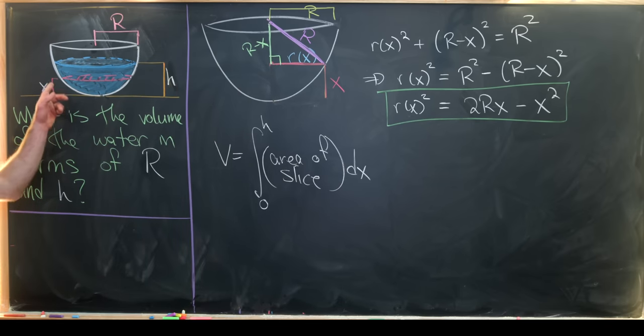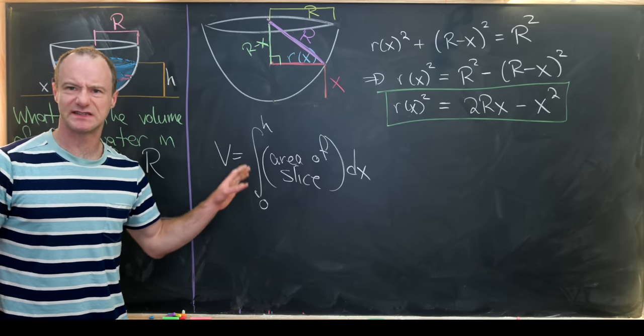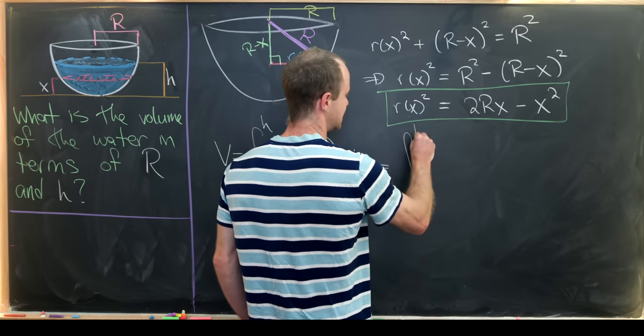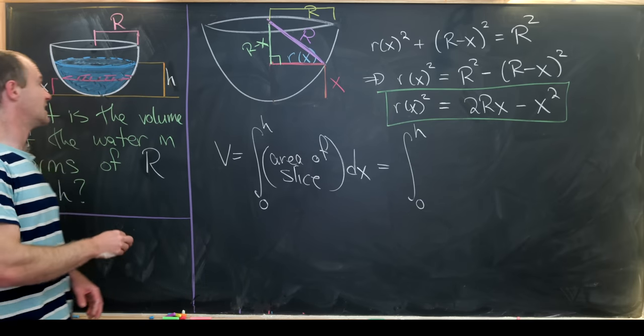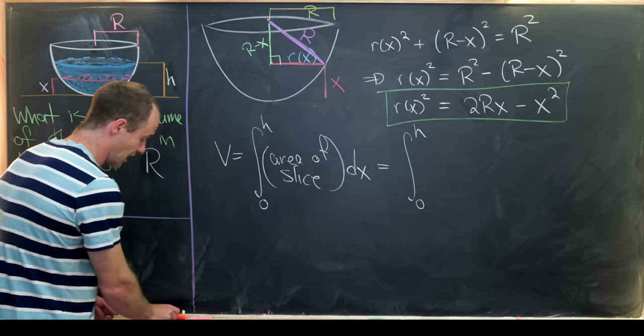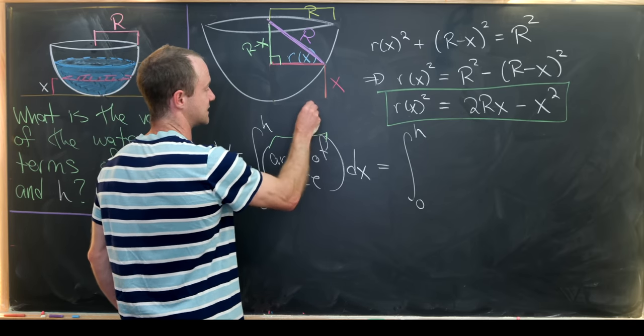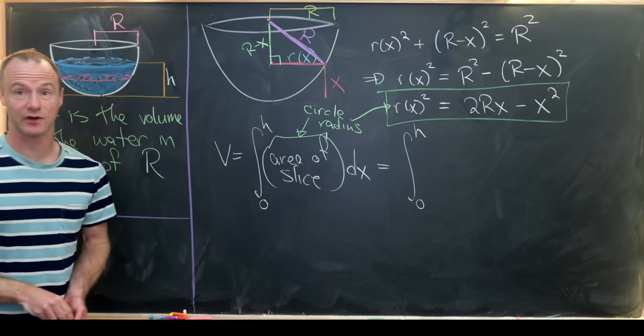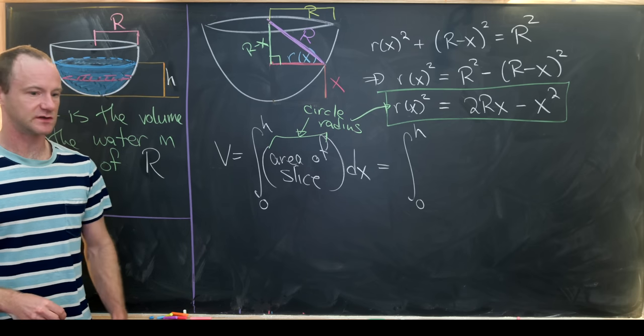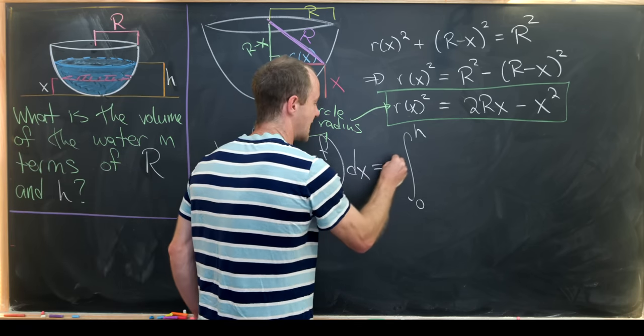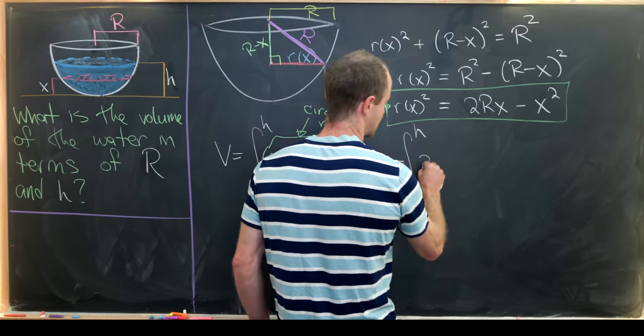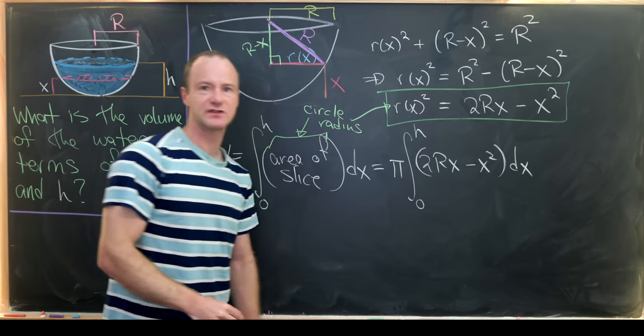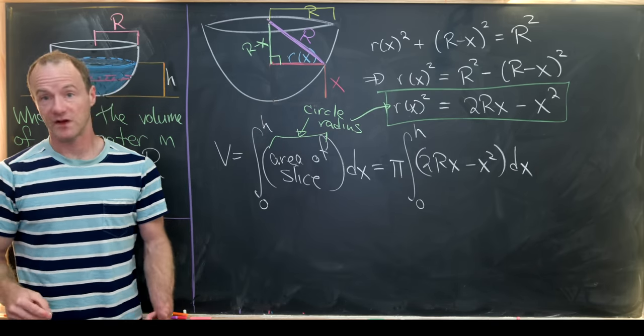So x is going from 0 to h, and so this is a standard trick from a second semester calculus class. That'll give us 0 to h, the integral. But then this slice is a circle of radius r of x. This is a circle with radius r of x, which we calculated over there. And we know the area of a circle is π r squared. So that means we have π times r squared here. So that'll be 2Rx minus x squared. But now we can pretty much finish this thing off with the fundamental theorem of calculus.